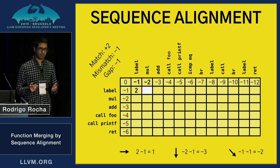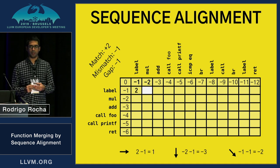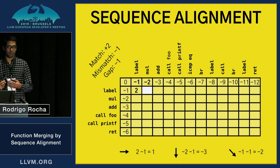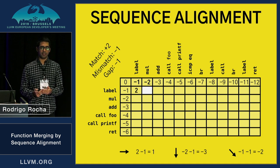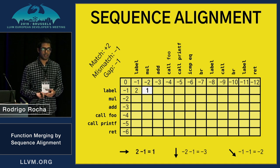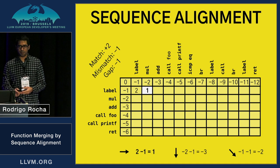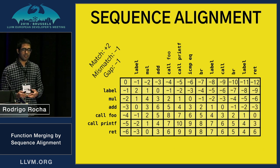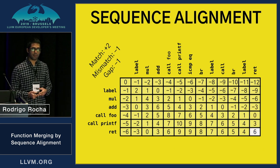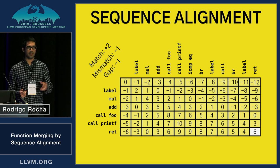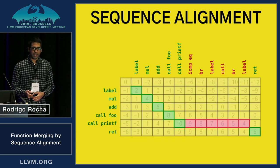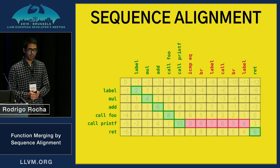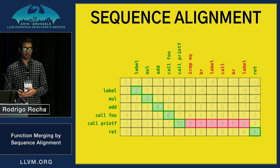We do the same for this other cell here, but in this case the diagonal has a mismatch because in one function we have a label and in the other we have a multiplication, so we apply the mismatch penalty. The maximum value here is coming from the left, so it's one. We repeat this process for the whole table, and then the solution is computed starting from the last cell and maximizing the path towards the first cell. And this is exactly our optimized sequence alignment that we had before.